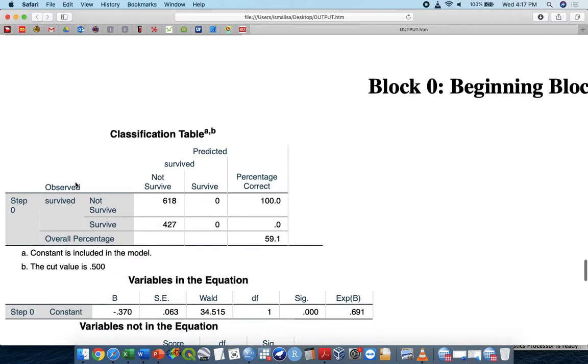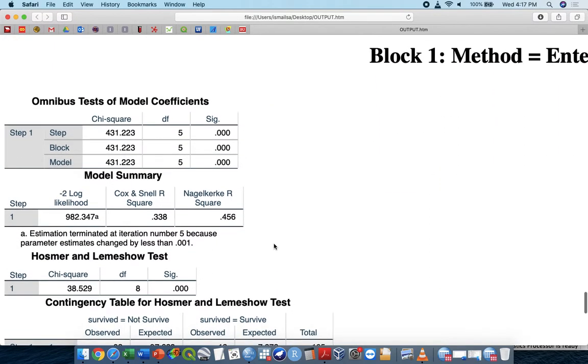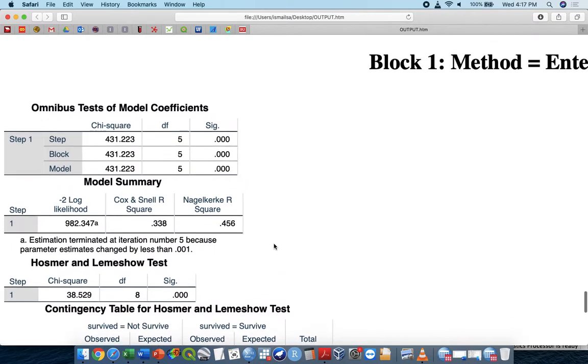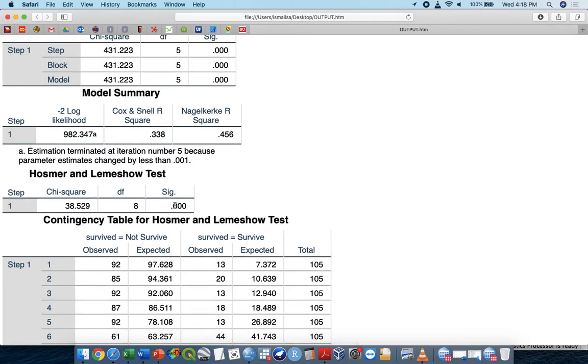Block zero is what? Null. So you see your null is 59%. That means the correct classification is sort of acceptable. But is that improved or not? You have to look and see on the model block number one. The omnibus test indicates the model is fit. The Nagelkerke R square also indicate acceptable, which is okay, 40% or something like that can be explained of this thing. But I would say acceptable.